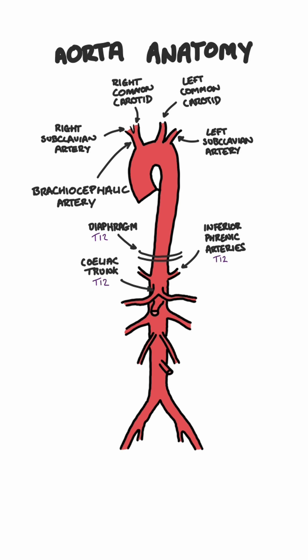Immediately below the celiac trunk, at L1, we have the superior mesenteric artery, which supplies the distal duodenum, the jejunum and ileum, ascending colon, and part of the transverse colon.